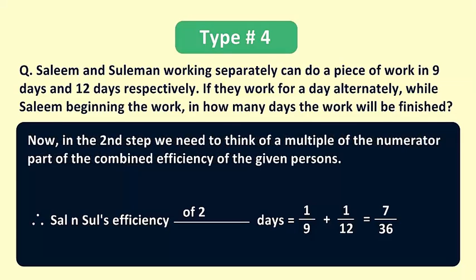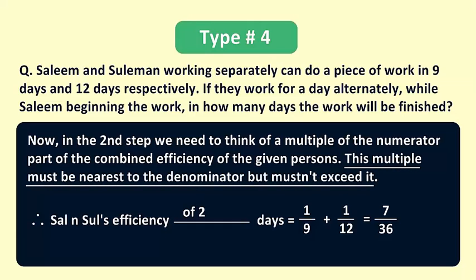Now in the second step we need to think of a multiple of the numerator part of the combined efficiency of the given persons, which is 7/36 here. So here we need to think of a multiple of 7, but the condition is that this multiple must be nearest to the denominator and must not exceed it.